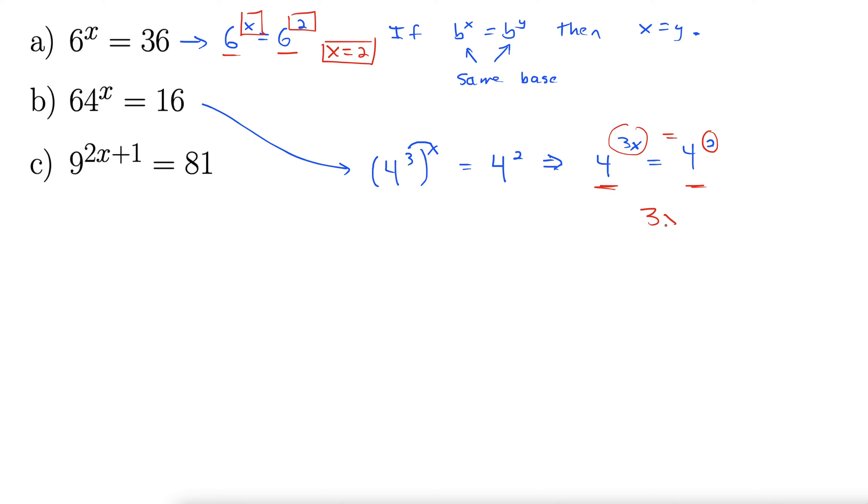So we can set these exponents equal. Alright, so that gives us 3x equals 2, which then tells us that x equals 2 thirds. There's that one.